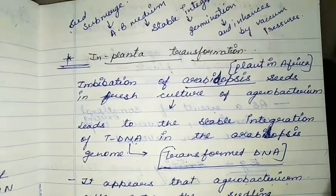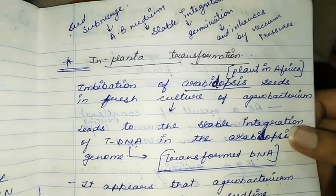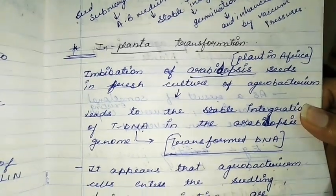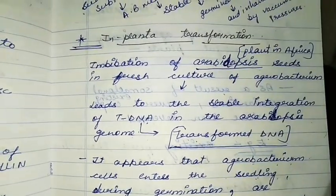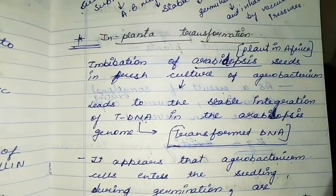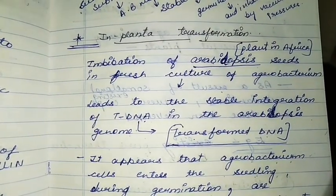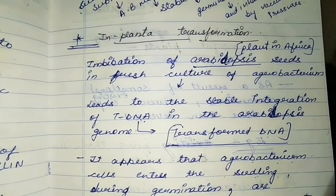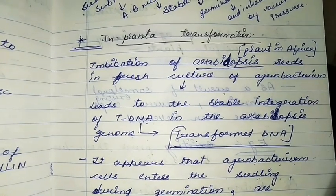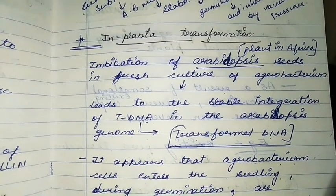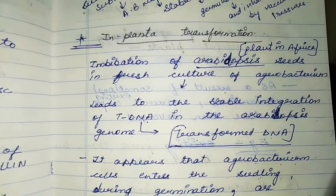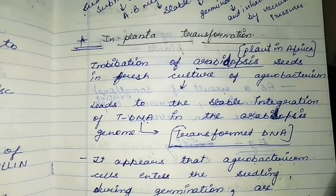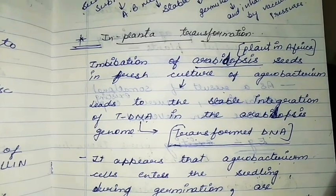It is a liquid media. In this liquid media, we soak or imbibate the Arabidopsis seeds with the Agrobacterium cells. The seeds are submerged to allow contact with the bacterial cells.